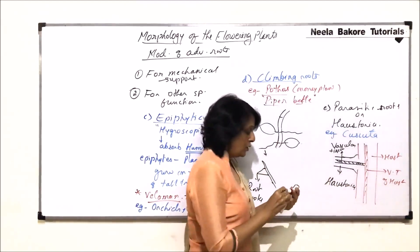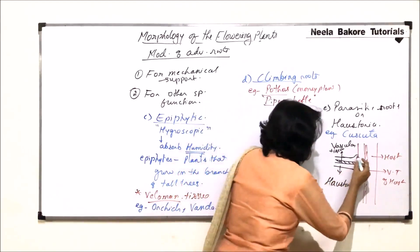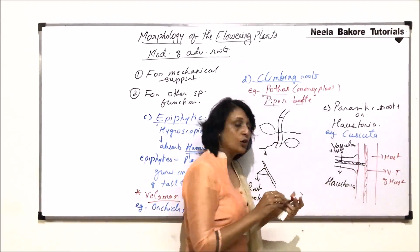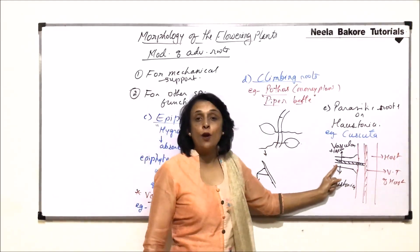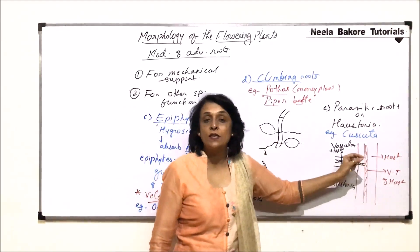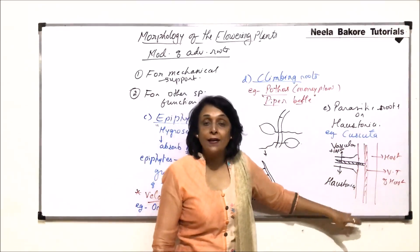And, this vascular tissue penetrates up to the vascular tissue of the host plant. This is vascular tissue of the host. So, what exactly is penetrating into the host plant is the vascular tissue. And, xylem and phloem are coming in contact with xylem and phloem of the host plant.